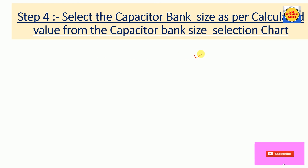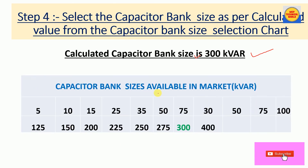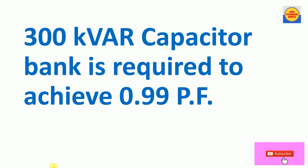Here we have the capacitor bank sizes available in the market on the selection chart. We compare our calculated value of 300 kVAR with the chart. We always select a value equal to or above the calculated value — never below. Here we have exactly 300 kVAR available, so our final proposed capacitor bank size is 300 kVAR.